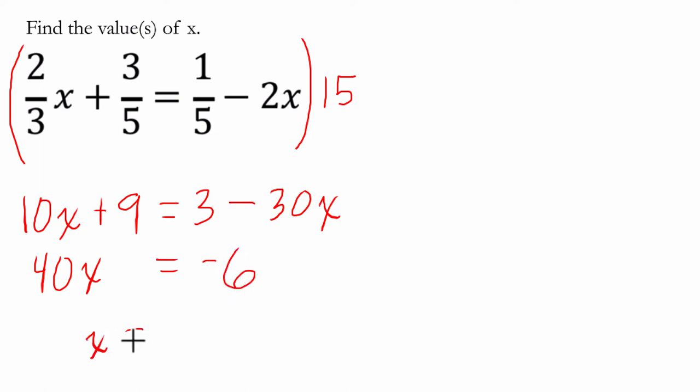I divide both sides by 40, and I'm basically done. I just need to reduce this fraction, so it's negative 3 over 20, which is the same as negative 0.15. I multiplied 20 by 5 to make this out of 100, so it's negative 15 out of 100, or negative 0.15.